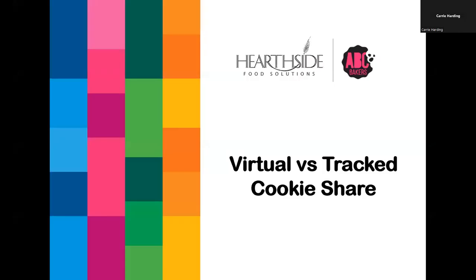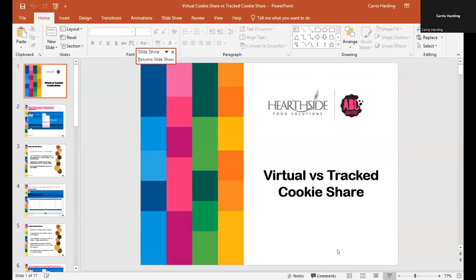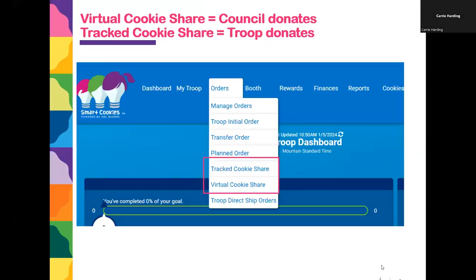I have a few slides to show the difference between virtual and tracked cookie share. Virtual cookie share refers to cookie share donation cookies that are going to be donated by your council. Tracked cookie share is cookie share that's going to be donated by your troop to a local nonprofit.